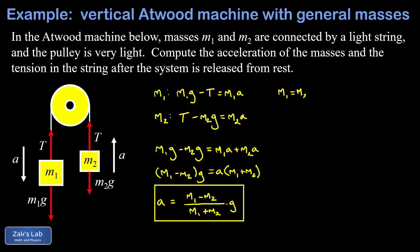The Atwood machine is balanced, the acceleration should be zero. If I look at my acceleration formula it has an m1 minus m2 right in the numerator, so if m1 is equal to m2, a is equal to zero. So that's good, we're starting to have more confidence in our formula.